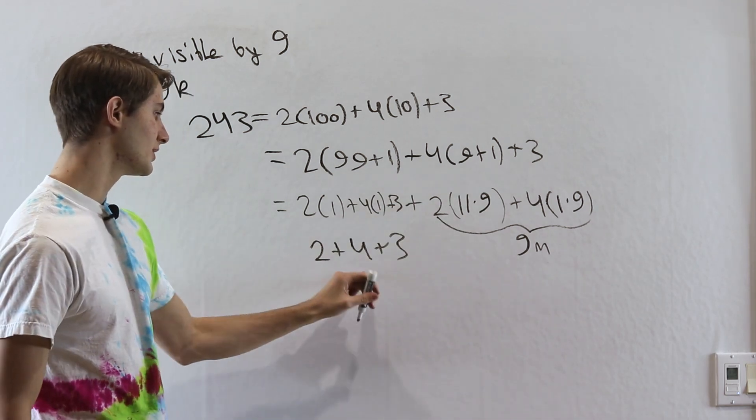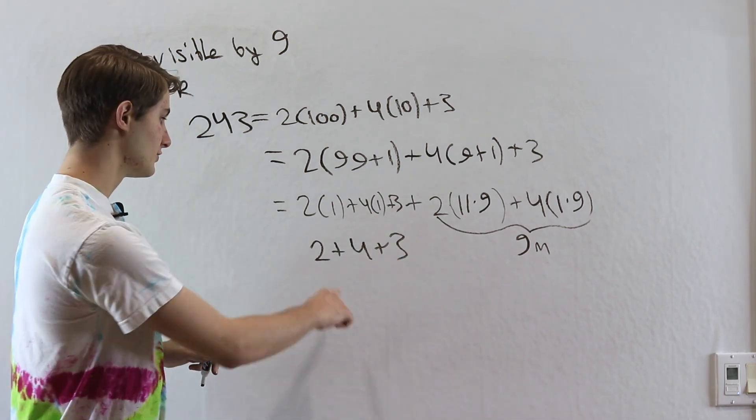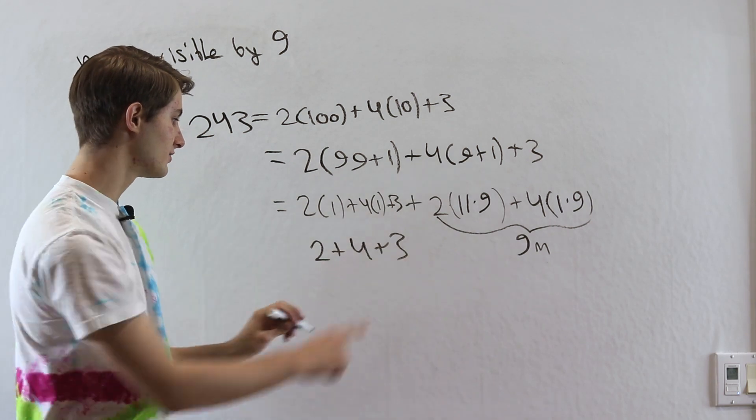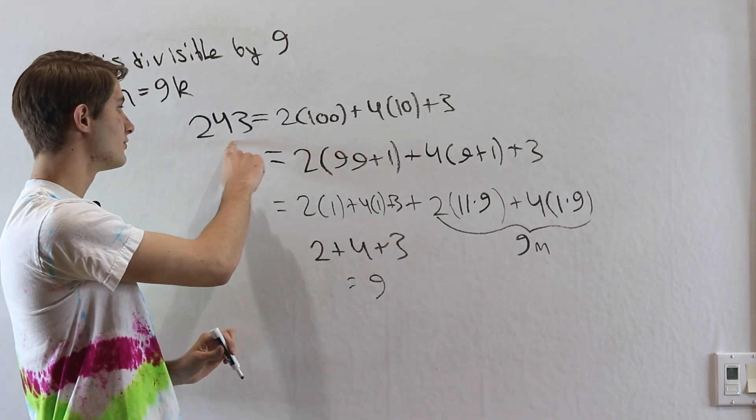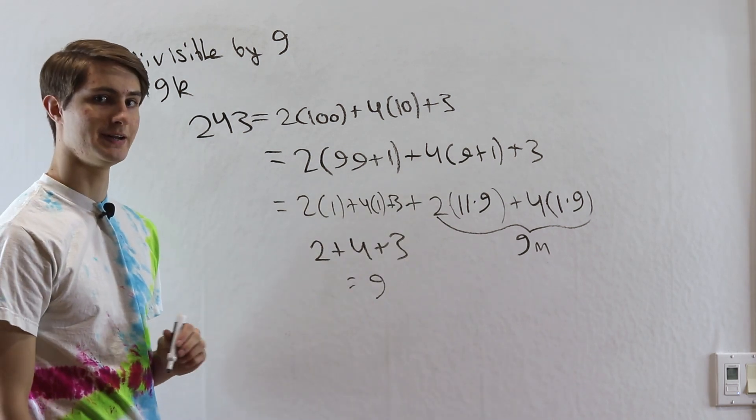In this case, 2 plus 4 plus 3, well 2 plus 4 is 6, 6 plus 3 is 9, and therefore we know that 243 has to be divisible by 9.